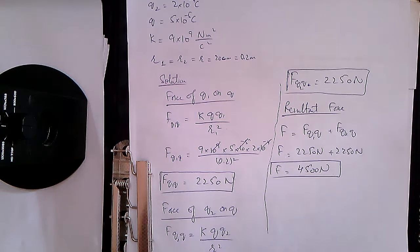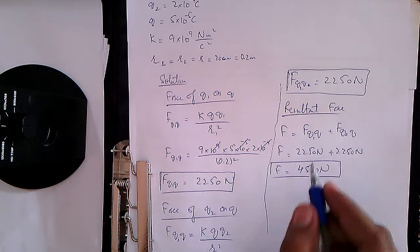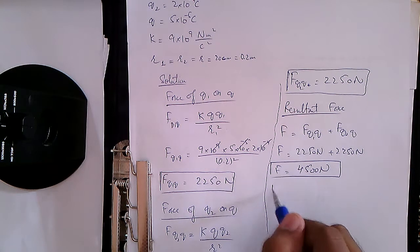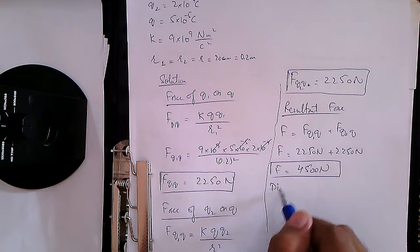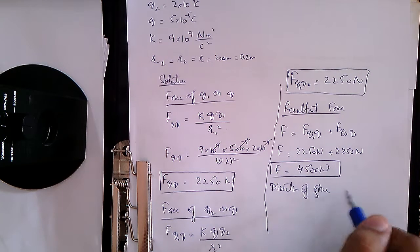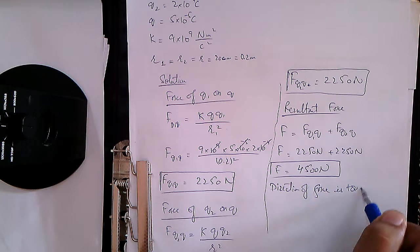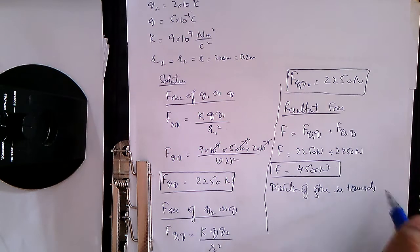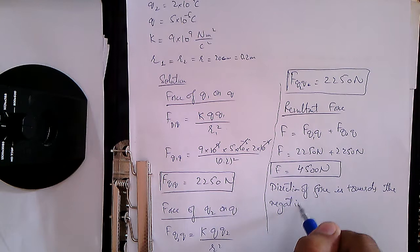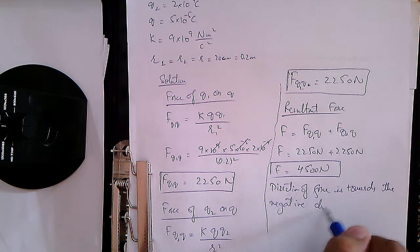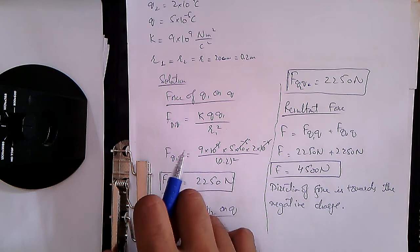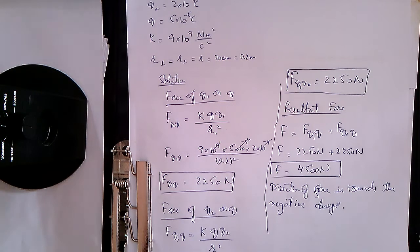This is the magnitude of force on the positive test charge of 5×10⁻⁵ coulombs. The direction of force is towards the negative charge. Thank you very much, I will see you in the next video.